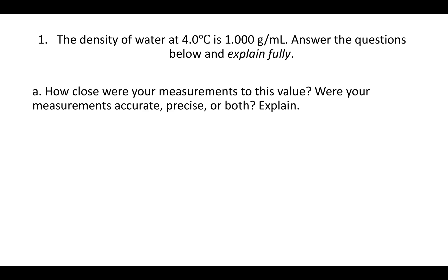Here's some help with the Experiment One post-lab. The first question says the density of water at four degrees Celsius is 1.000 grams per milliliter. Answer the questions below and explain fully. So the first question is how close were your measurements to this value? Were your measurements accurate, precise, or both? And explain. This is really more than one question.